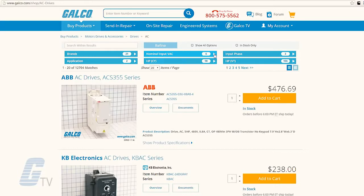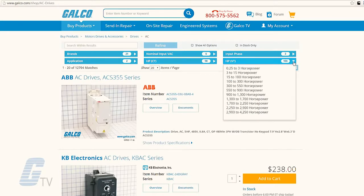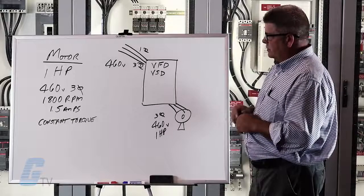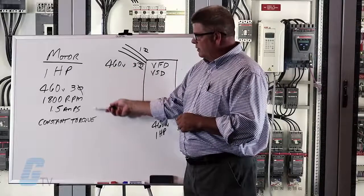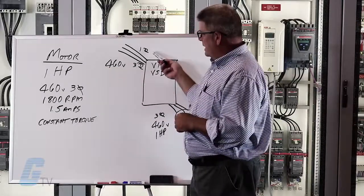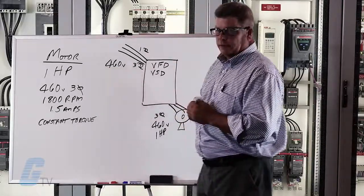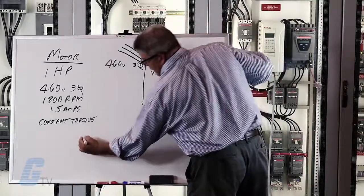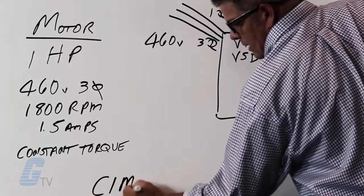So by taking this motor data and using a parametric search that is available on galco.com, we can select a drive that fits our requirements today. Parametric search allows us to type in the horsepower and the motor requirements. It also allows us to type in our supply requirements. So today by using that information I was able to select the Yaskawa drive.